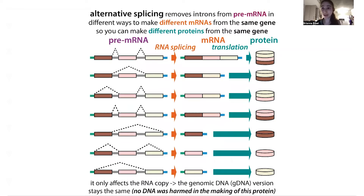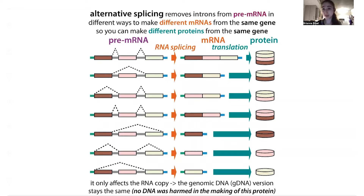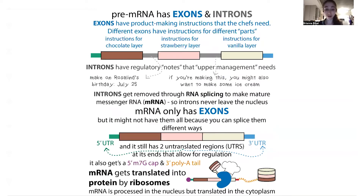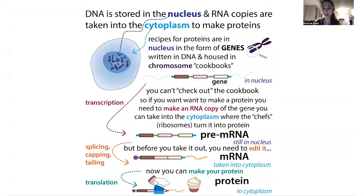It's like if you had a cake recipe for a three-layer cake — you can make a one-layer cake, a two-layer cake, or a three-layer cake. We'll see something called alternative splicing that allows us to differentially regulate and make different versions of the protein based on that same original recipe. Those are some of the key benefits of having an RNA intermediary.